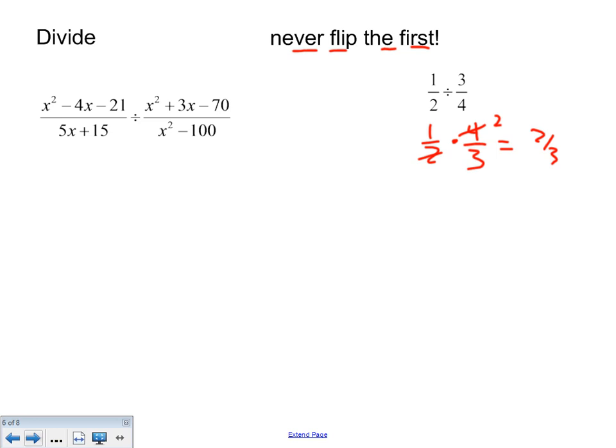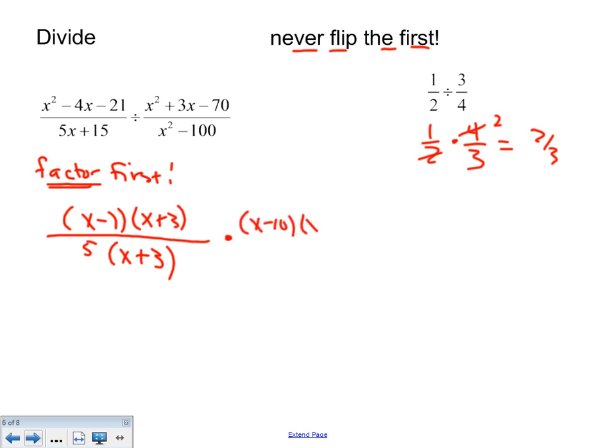x squared minus 4x minus 21. I would always suggest factor first before you do the flipping. Factor first. x squared minus 4x minus 21. x minus 7, x plus 3. Over 5x plus 15. Take out the 5. x plus 3. Right away, I'm going to see an x plus 3. I'm going to be able to reduce. Times by. Now the second one is going to flip upside down. x squared minus 100 is the difference of squares. x plus 10, x minus 10. That's going to end up on the top. And then in the bottom. x squared plus 3x minus 70. x plus 10. x minus 7.